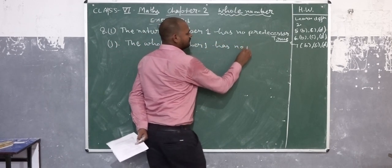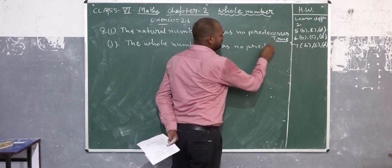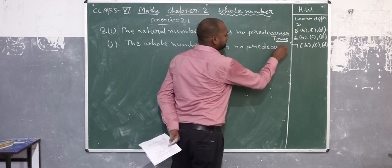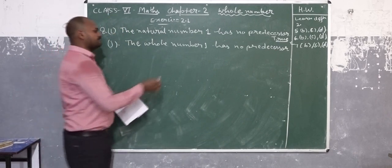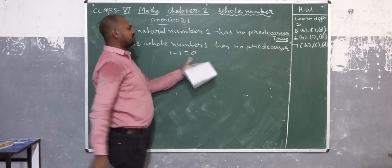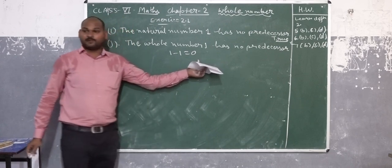One has no predecessor. Same, if I find the predecessor output, one minus one subtract and zero, zero is a whole number. So the statement is false.